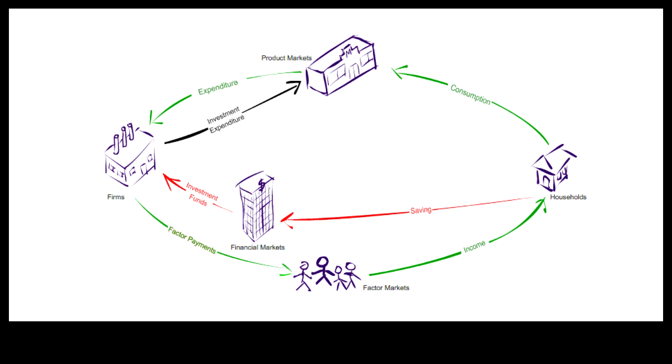What about the government? Don't taxes also represent leakage from the spending stream? We indicate this as net taxes because the government also transfers payments to the households. But the government can be depended upon to recycle net taxes back to the spending stream via the factor markets and the product markets.